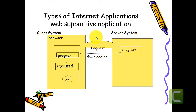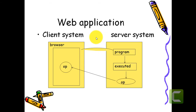The server just sends whatever we want. If I ask for JDK, it sends the JDK software to me. If I ask for Eclipse, it sends the Eclipse software to me. This is nothing but a web supportive application. Now let's talk about the other type of internet application — the web application. In a web application, the client's browser requests a program, but the server doesn't directly send the program to the client. Instead, it executes the program on the server itself and sends the output to our system.